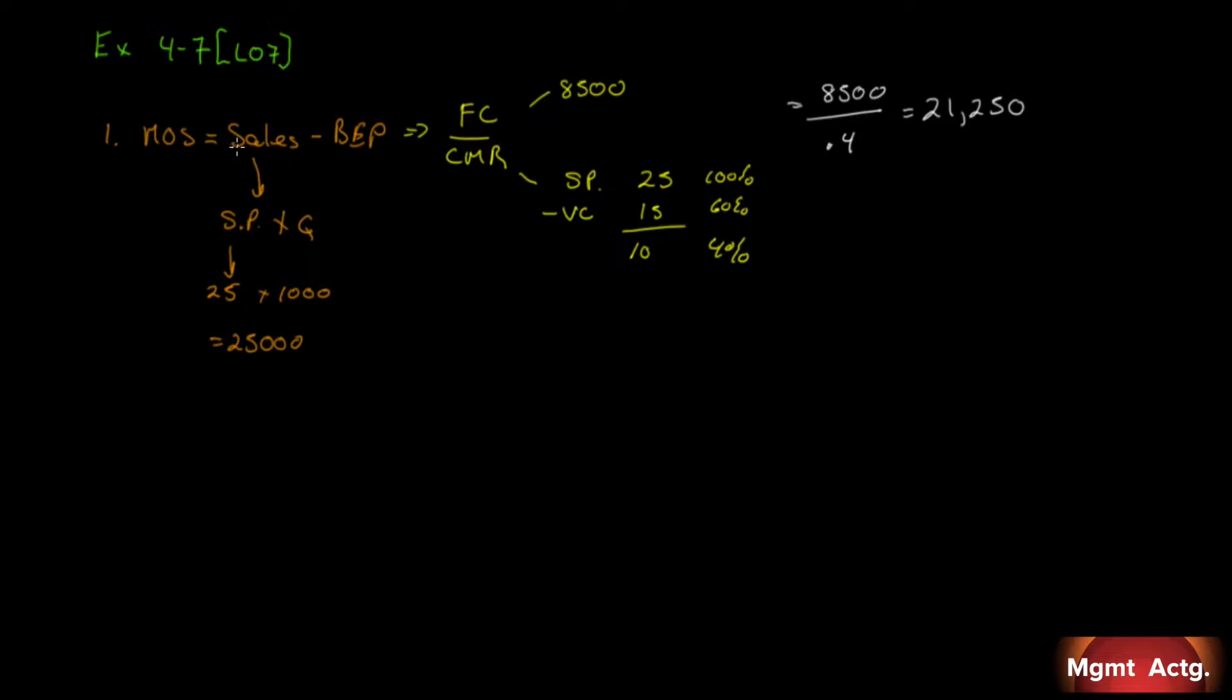So our margin of sales is sales minus our break-even point. We're in a position to actually solve that now. So therefore, margin of safety equals sales, $25,000 minus our break-even point of $21,250 will give us $3,750. There we go. Let's look at our next one, number two.